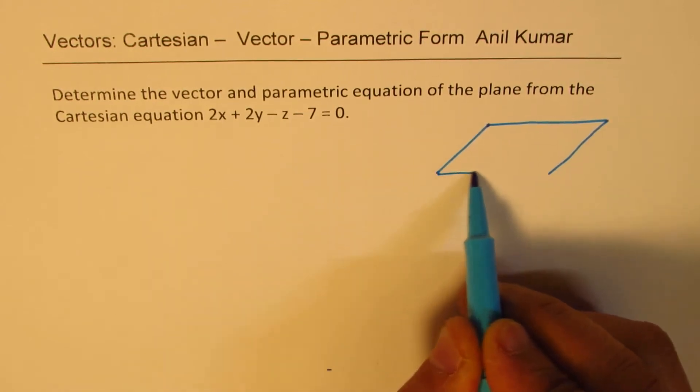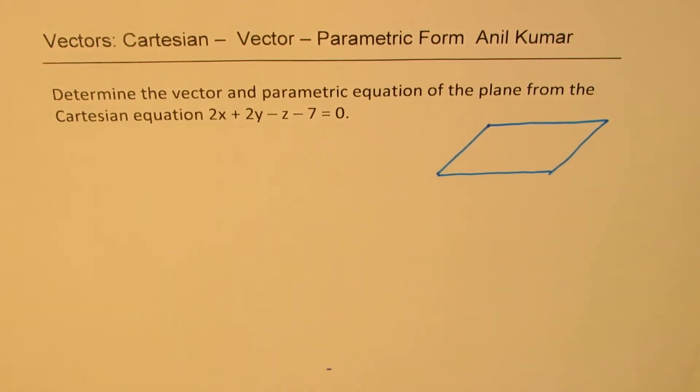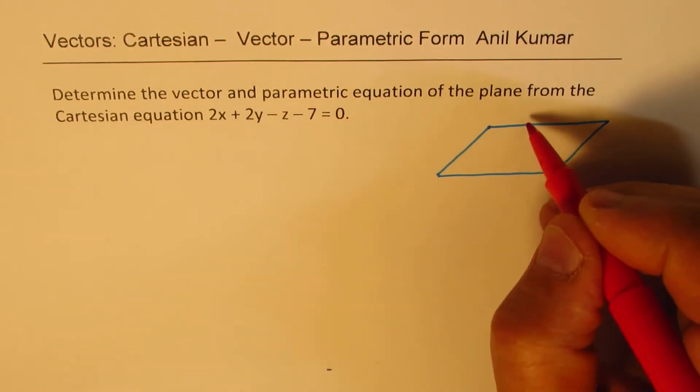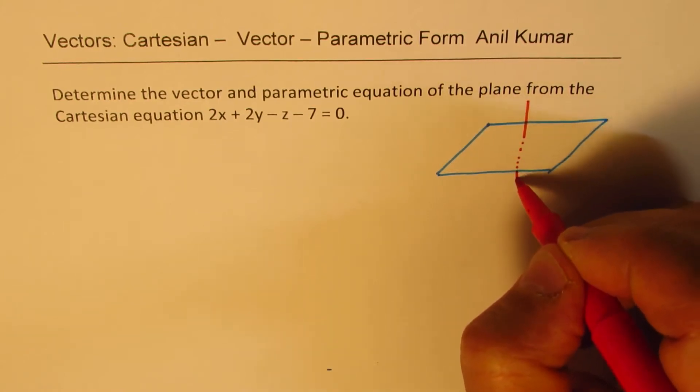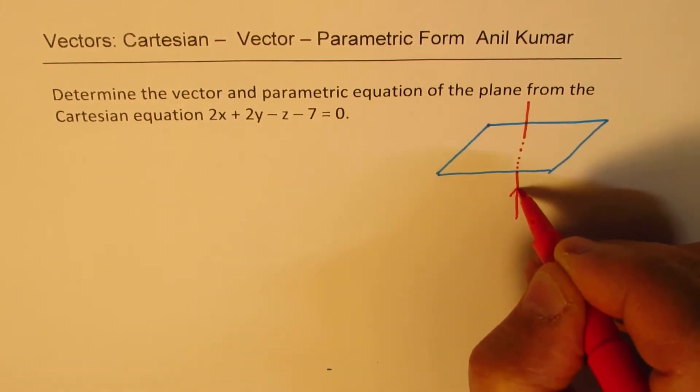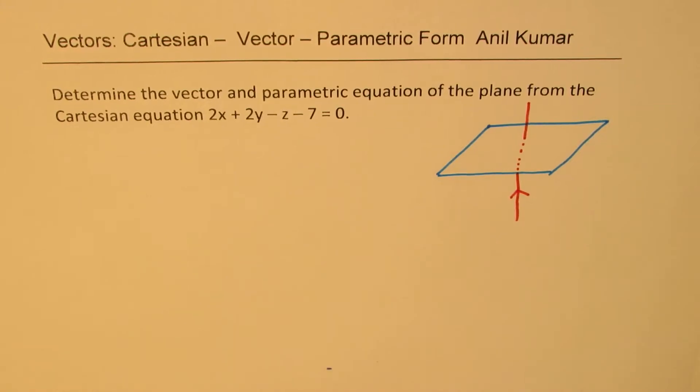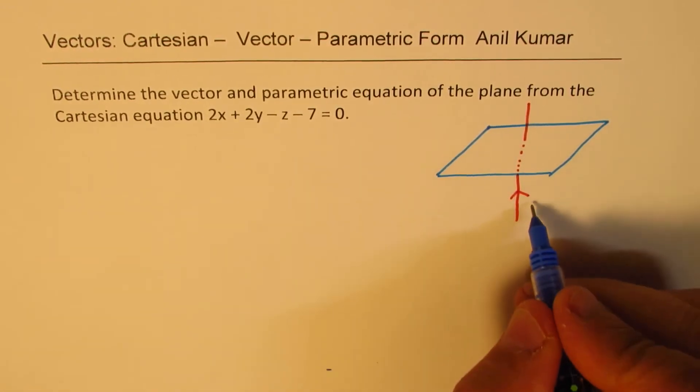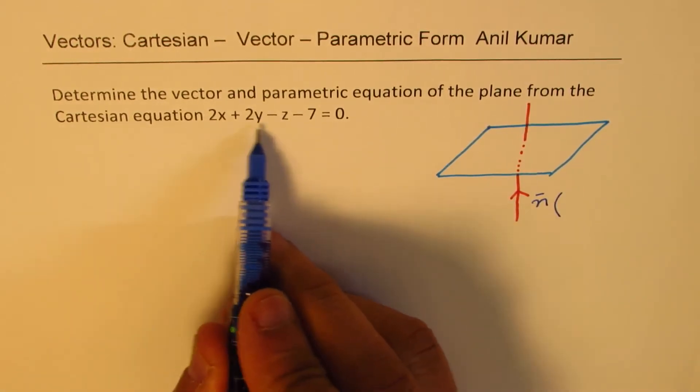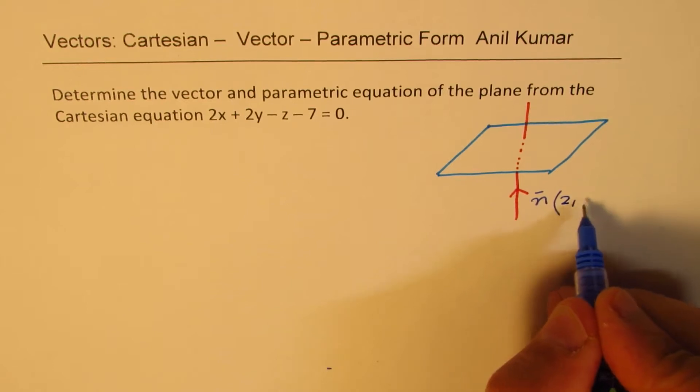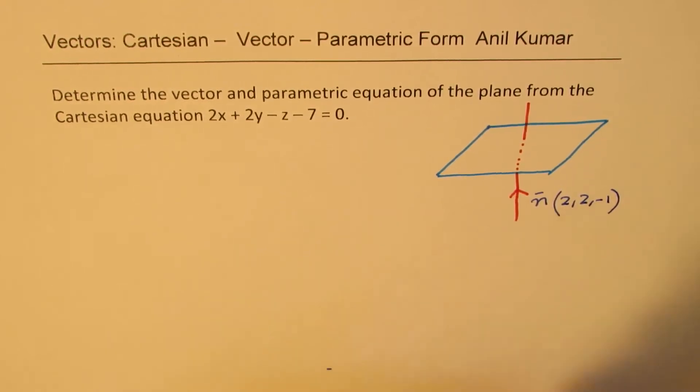So, let us say this is our plane. If we are given a Cartesian equation, then it is saying that there is a normal to this. With respect to this normal, it is defining the plane, where we know that the normal vector in this case is 2, 2 and minus 1.